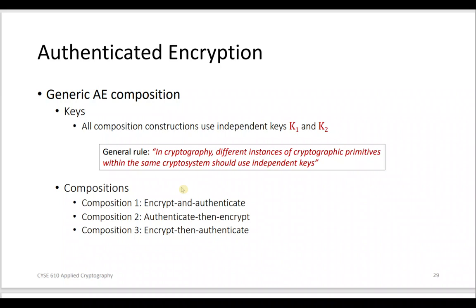For generic AE compositions, we need two keys: one key for integrity and one for confidentiality. These keys must be independent. In cryptography, different instances of cryptographic primitives within the same system should use independent keys. Confidentiality and integrity are two different things, so they require two different keys.